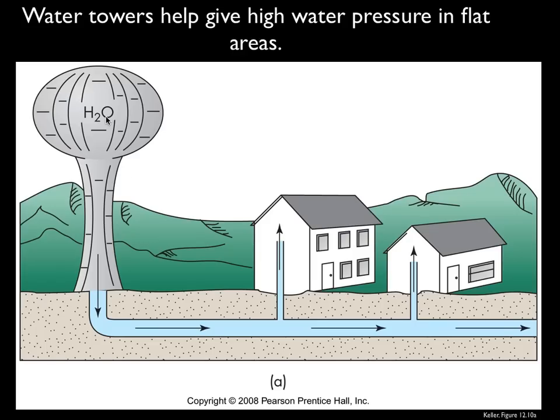Water towers — the purpose of them is to help give high water pressure in flat areas. So let's say you've got this water tank here. This water is going to help give water pressure so that on the second story of this apartment building, you'll be able to take a nice, strong shower.